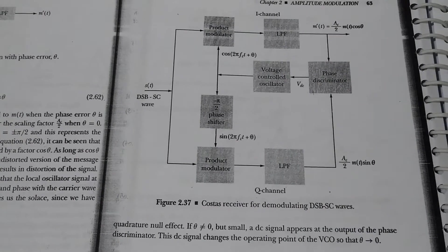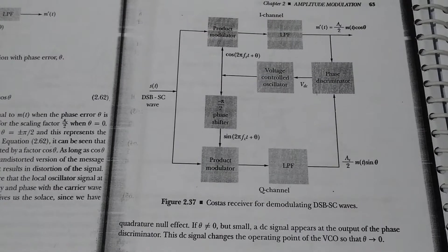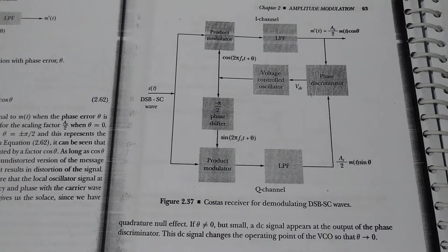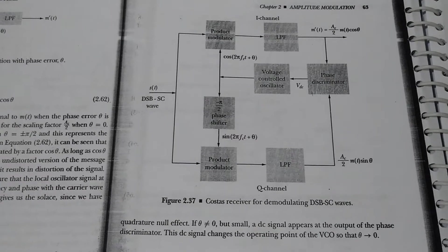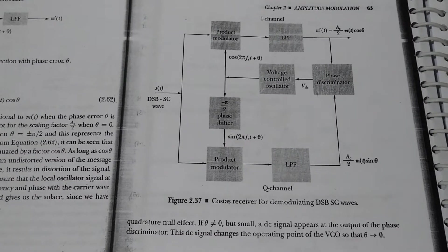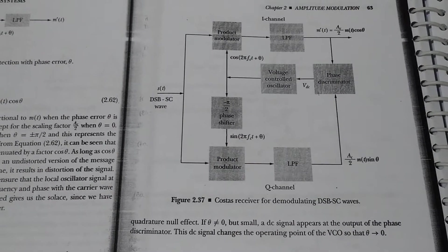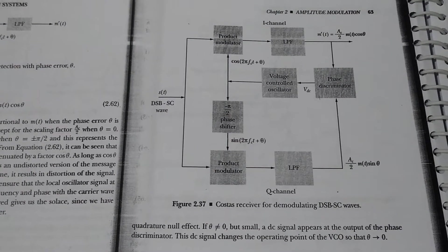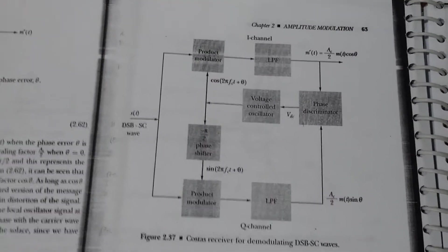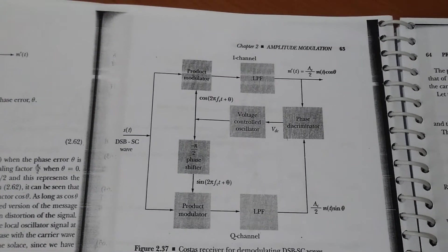If θ is not equal to 0 but is small, a DC signal appears at the output of the phase discriminator. This DC signal changes the operating point of the VCO so that θ is driven back to 0. Here we can observe the Costa receiver operating for demodulation of a DSB-AC wave.